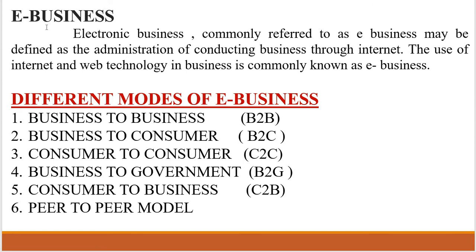First one, e-business. E-business means electronic business. Commonly referred to as e-business, it may be defined as the administration of conducting business through the internet. The use of internet and web technology in business is commonly known as e-business. E-business, derived from such terms as email and e-commerce, is the conduct of business on the internet, not only buying and selling but also servicing customers and collaborating with business partners.